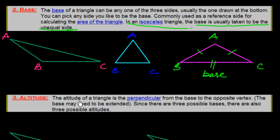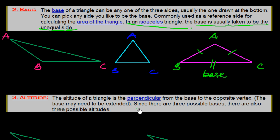Now I explain the altitude. The altitude of a triangle is the perpendicular from the base to the opposite vertex. The base may need to be extended, as in the obtuse angle triangle where we extend the base. Since there are three possible bases, there are also three possible altitudes.